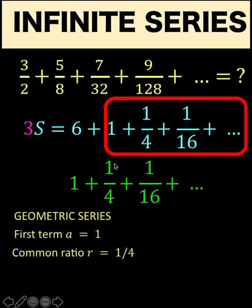Because 1 times 1 fourth is 1 fourth. 1 fourth times 1 fourth is 1 over 16 and so on. The first value of this series is 1. And since the common ratio r is 1 fourth, and 1 fourth is between negative 1 and 1, we know that this sequence is convergent. In other words, we can find an exact value for this infinite series.